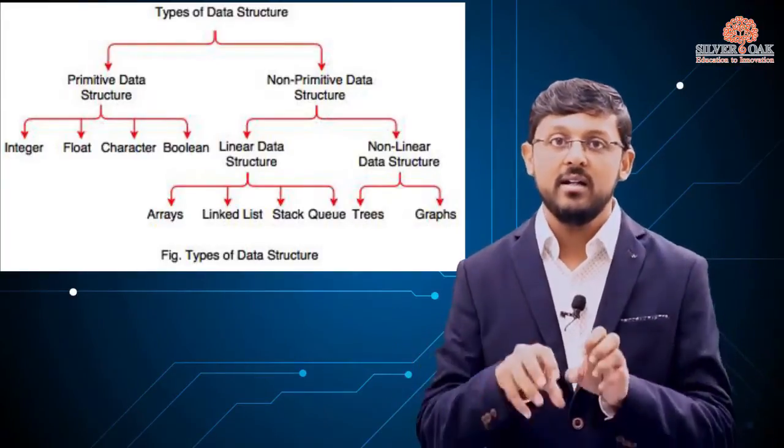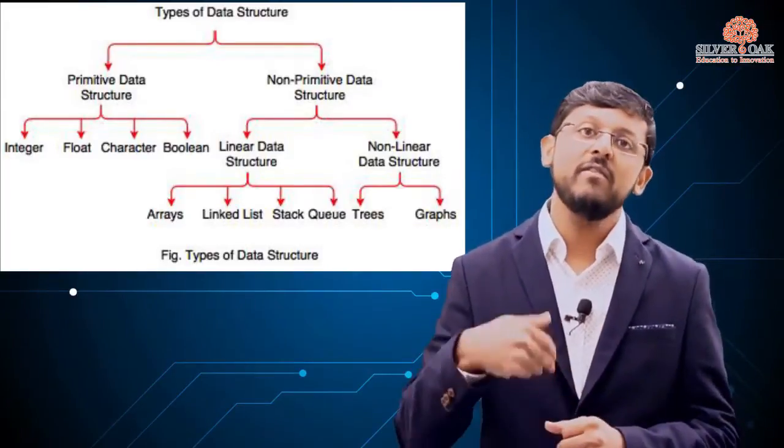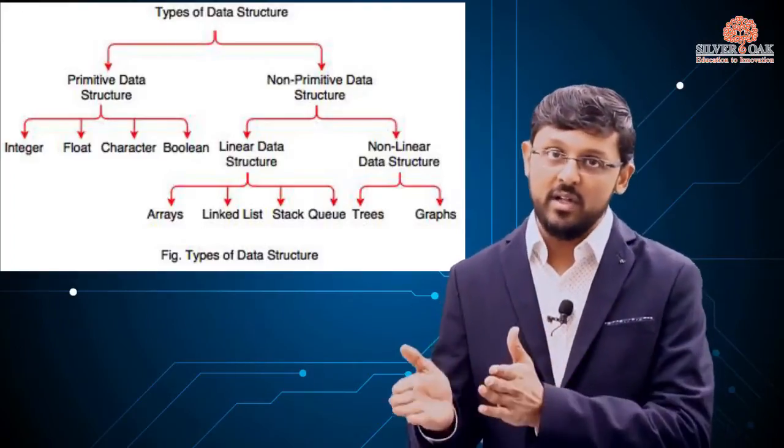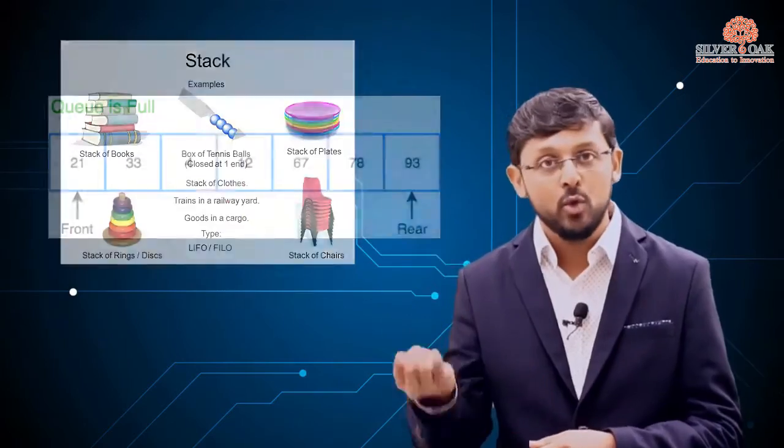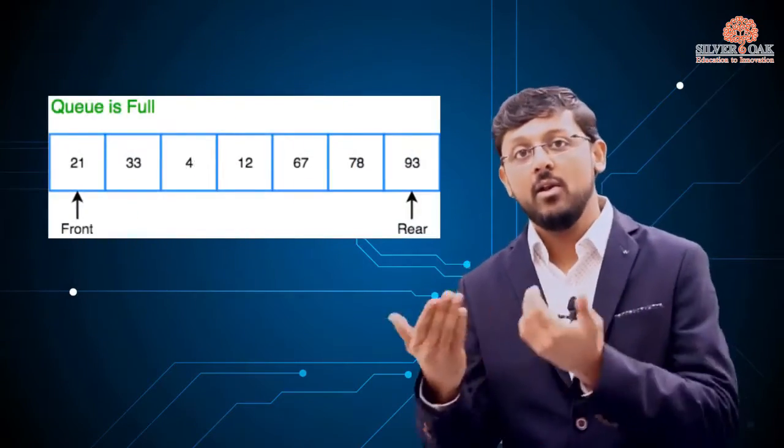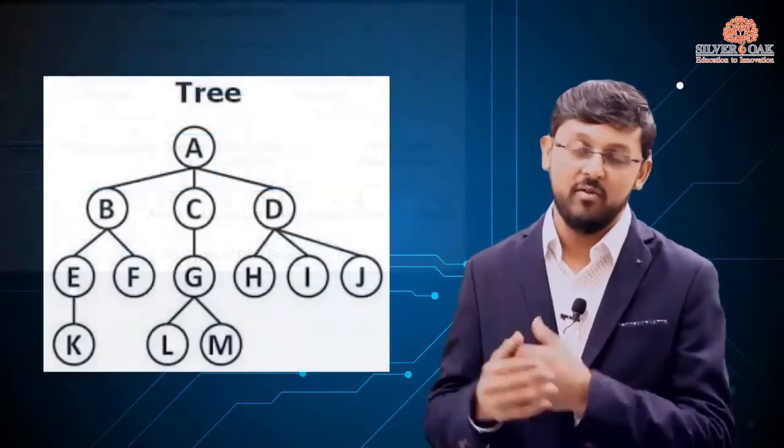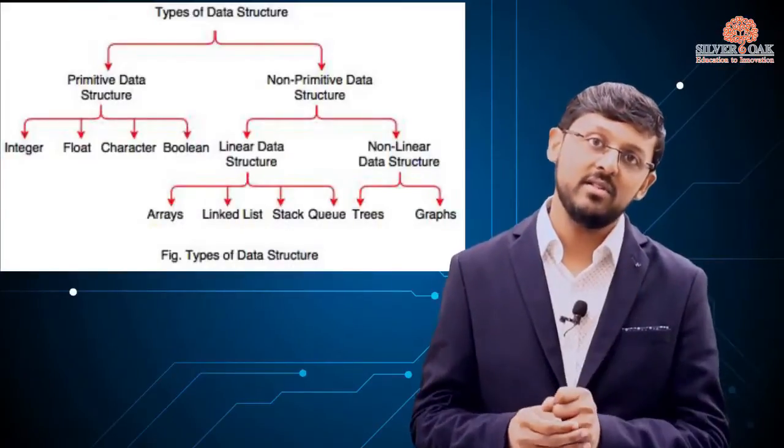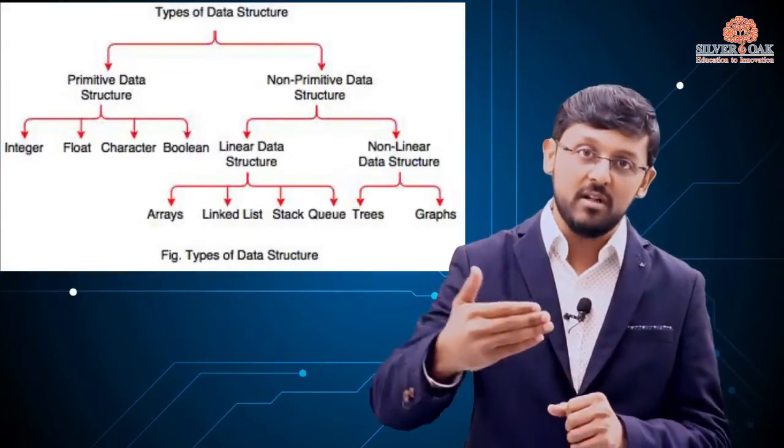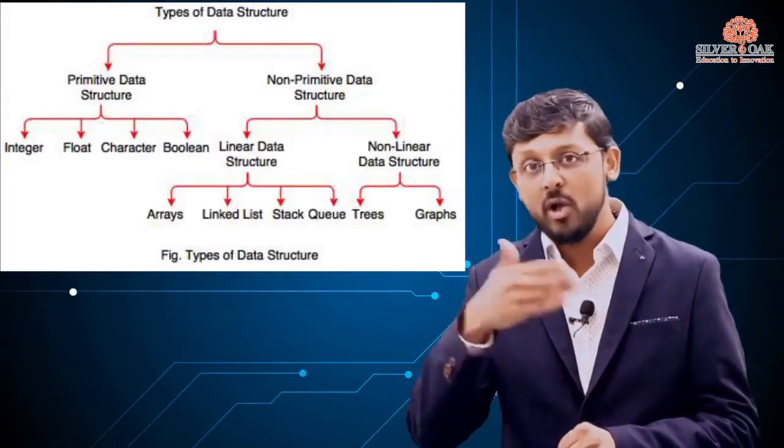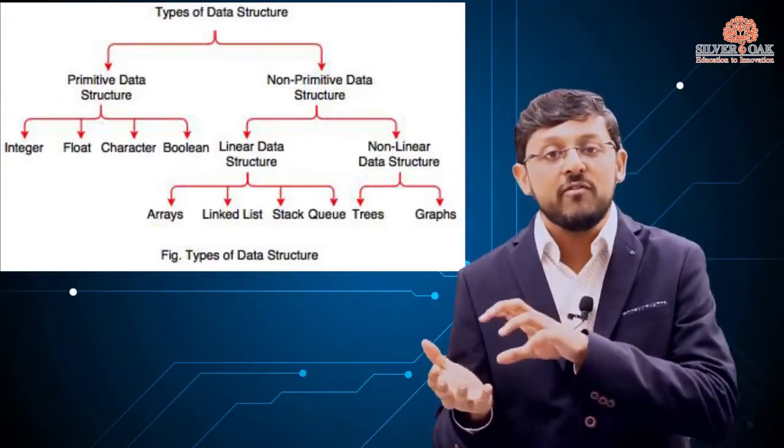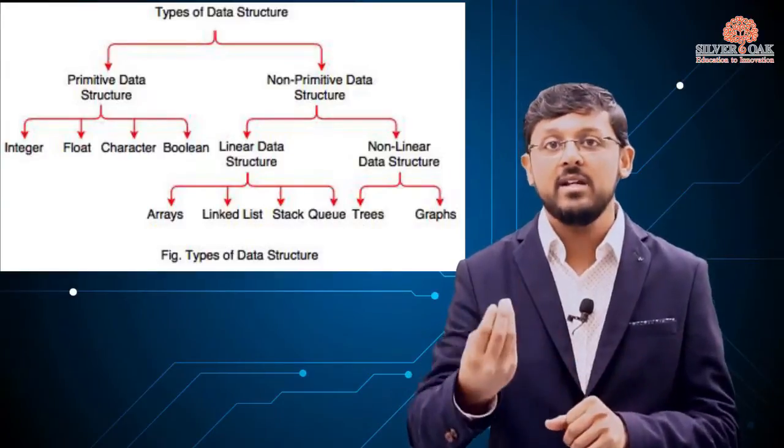These are all data structures. In non-primitive, we have linear and non-linear categories. Linear data structures include arrays, stacks, queues, and linked lists, while non-linear includes trees and graphs. Linear data structures store elements in a sequence or fixed pattern, while non-linear data structures don't follow a fixed pattern.